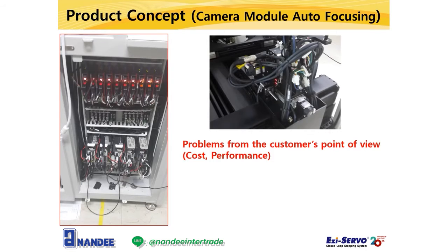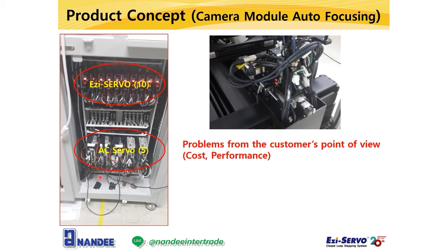Using an actual machine as an example, I would like to introduce the concept of Ethernet product development. This machine aligns the lens and sensor of the camera module used in a smartphone. As you can see in the photo on the left, the customer applied 10-axis of EasyServo 2 Plus E, a standard type of closed-loop stepping system, and 5-axis of AC servo. When setting the machine, there is a case that the machine requires AC servo motor, stepping motor, and I/O module at the same time.